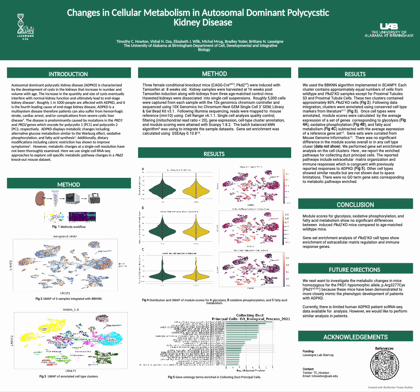Once cells were annotated, module scores were calculated by the average expression of a gene set corresponding to glycolysis in figure 4a, oxidative phosphorylation in figure 4b, and fatty acid metabolism in figure 4c, subtracted from the average expression of a reference gene set. Gene sets were curated from the mouse genome informatics database. We found no significant difference in the module scores overall, and we also checked individual cell type clusters and found no significant differences.